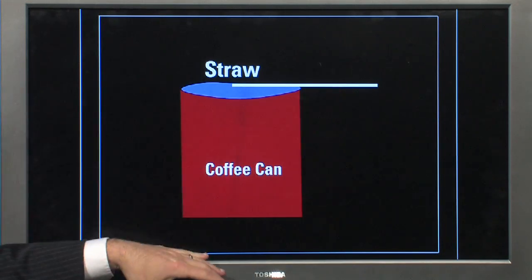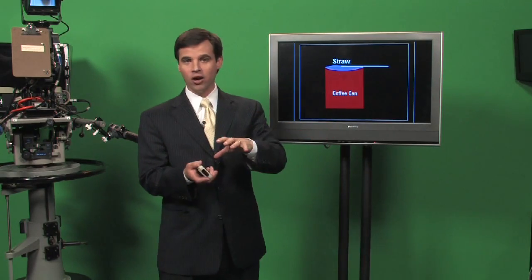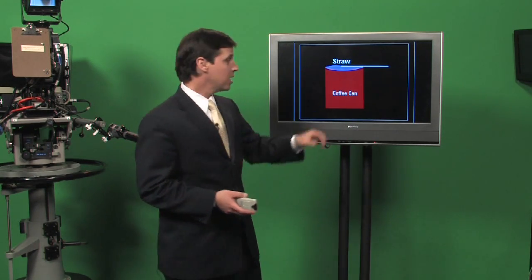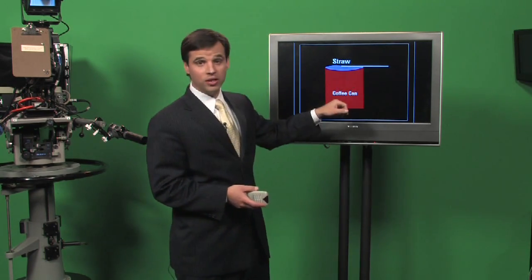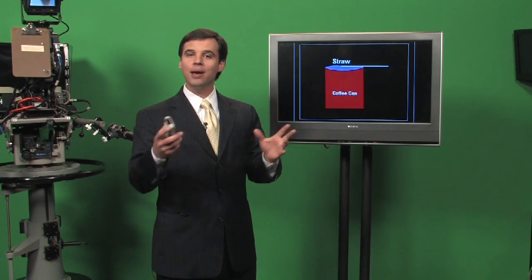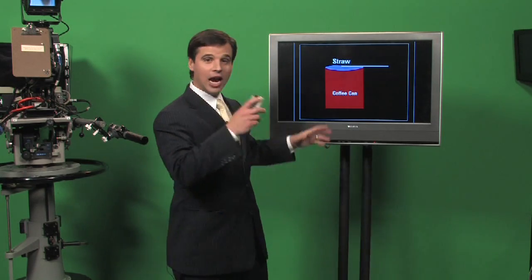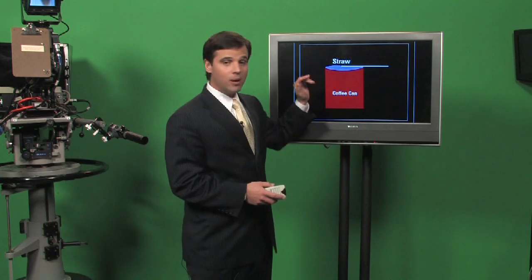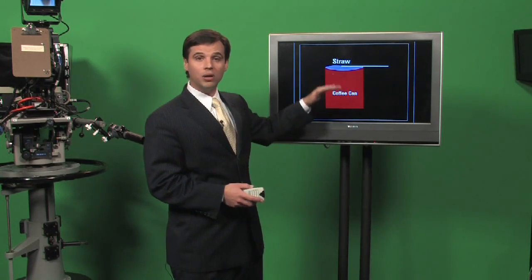So now you have inside this coffee can air, and the air is the same as it was on the outside. Now attach a straw with a piece of tape to the balloon that's on the top. Now what happens is as time goes on and the air pressure outside the can changes, you'll be able to measure that as the balloon begins to move.